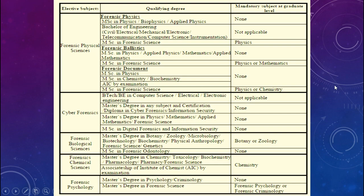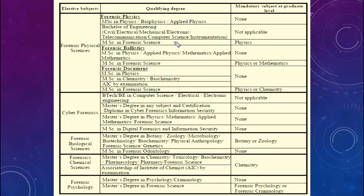Now let's look at the eligibility criteria. For forensic physical sciences, you must have an MSc in physics, biophysics, or applied physics. Alternatively, a bachelor's degree in engineering in civil, electrical, mechanical, electronics, telecommunication, computer science, or instrumentation qualifies you. You may also have an MSc in forensic science, but if so, the mandatory graduation subject must be physics. For MSc in physics, biophysics, or applied physics, and for engineering degrees, there is no mandatory graduation subject.